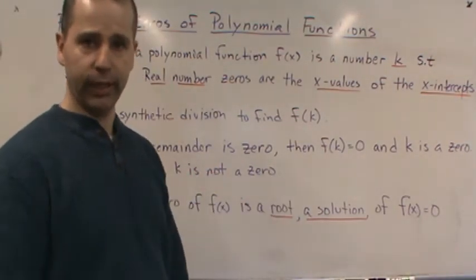Well, if the remainder is zero, then that means f of k is equal to zero, and thus k is a zero of the polynomial. Otherwise, k is not a zero.